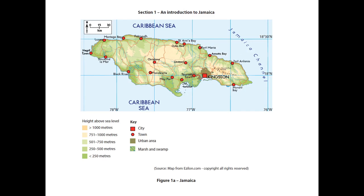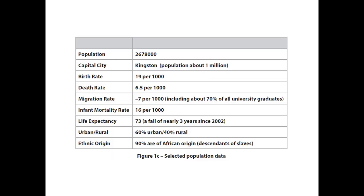Okay, welcome back, and hopefully you've finished that first section. Here's some selected population data. Think about what this shows us - birth rates really high, death rates starting to get lower. Which level of the Demographic Transition Model is that? Importantly, about 70% of all university graduates leave the country. Life expectancy has actually been going down. What can you deduce from that table? Pause the video and fill it in.